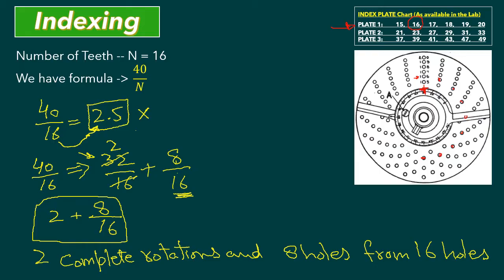That is why you need to do this calculation to find the best solution and complete your indexing. The final answer is: rotate the crank 2 times, then put the crank at hole 8 — this is the new reference. After cutting one tooth, start again from the new reference, rotate 2 times, and move 8 holes to reach the same relative position. Repeat this process until all 16 teeth are cut.